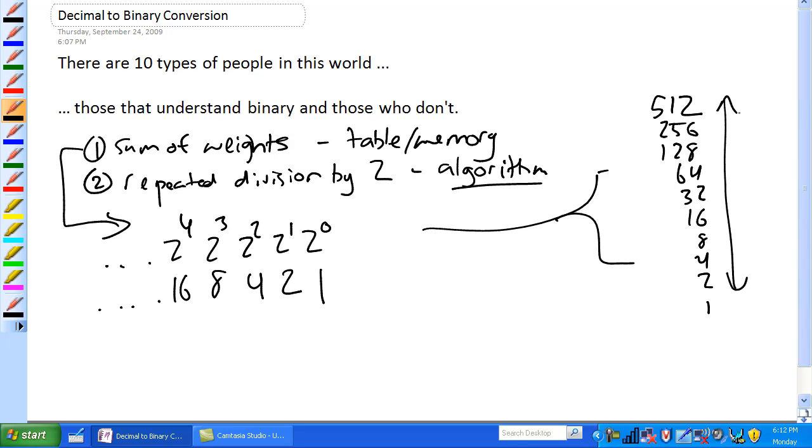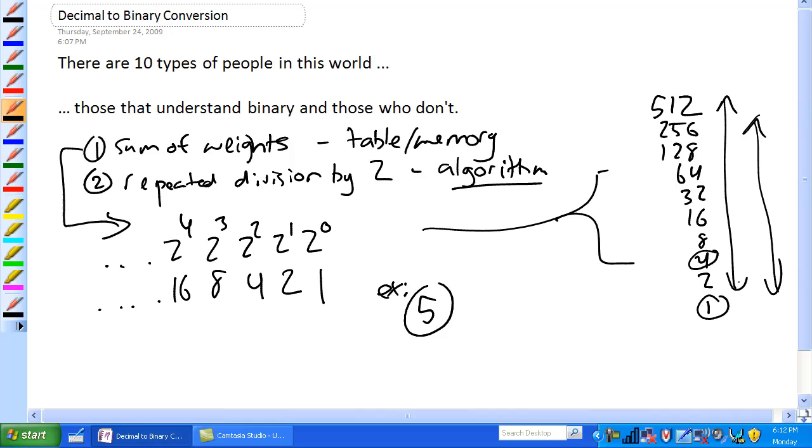The way you use the sum of weights is find the binary weights that add up to that decimal number you're interested in. For example, let's just do 5. What are the binary weights in this table over here that add up to 5? Well, it's pretty obvious it's 4 and 1. There's no 2s in there. Four plus one, so there's no 2s. So that means it's 2^2. So, 1×2^2 + 0×2^1 + 1×2^0. That is 1, 0, 1. That's the binary equivalent of 5.